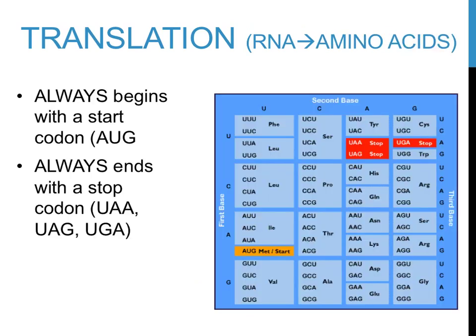Translation always begins and ends at specific points of an mRNA sequence that are referred to as start and stop codons. Each of the cells in your body contains billions of letters worth of nucleic acids and codes for 20,000 or more proteins. Starting and ending translation at the correct location is very important. All human proteins begin with the same start codon, AUG, which produces the amino acid methionine. There are three different stop codons that end translation. These sequences are UAA, UAG, and UGA.